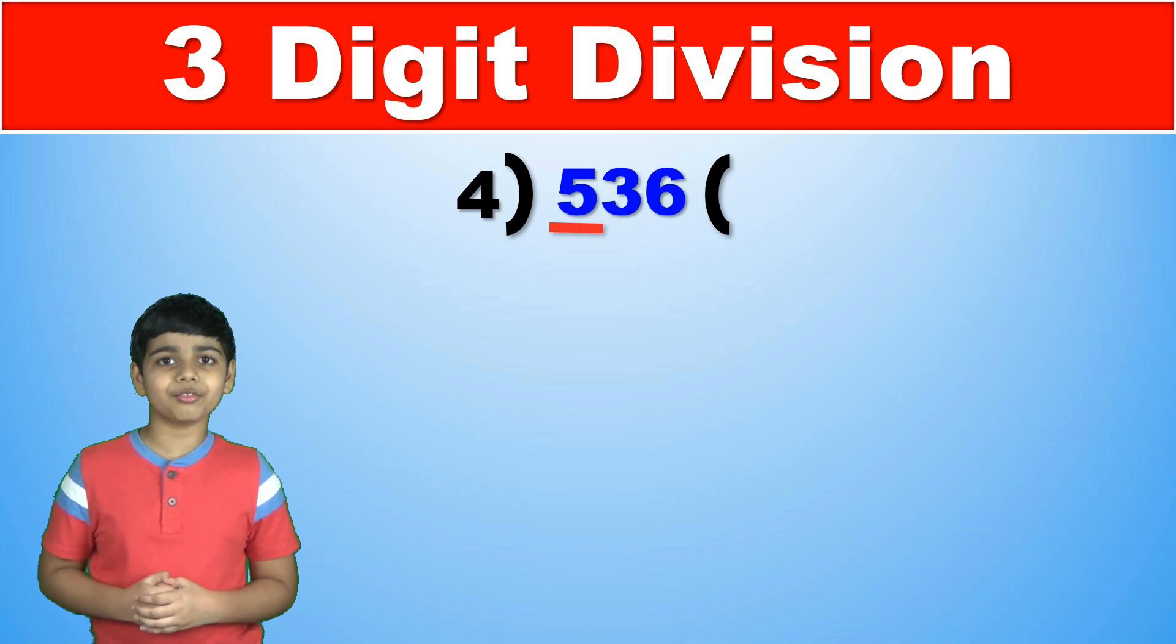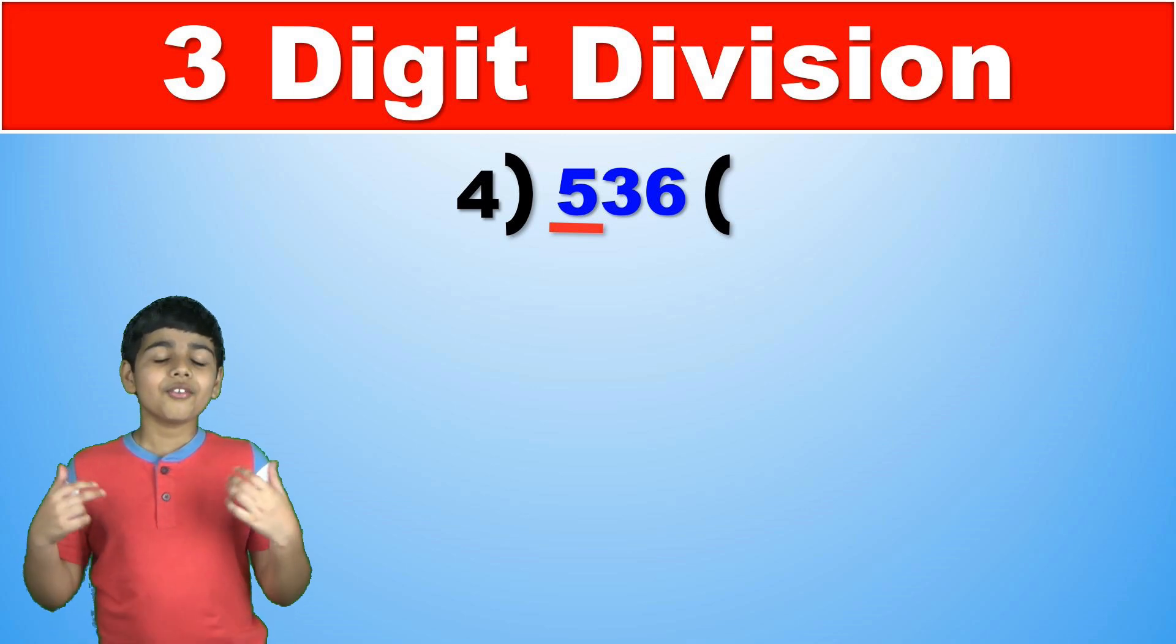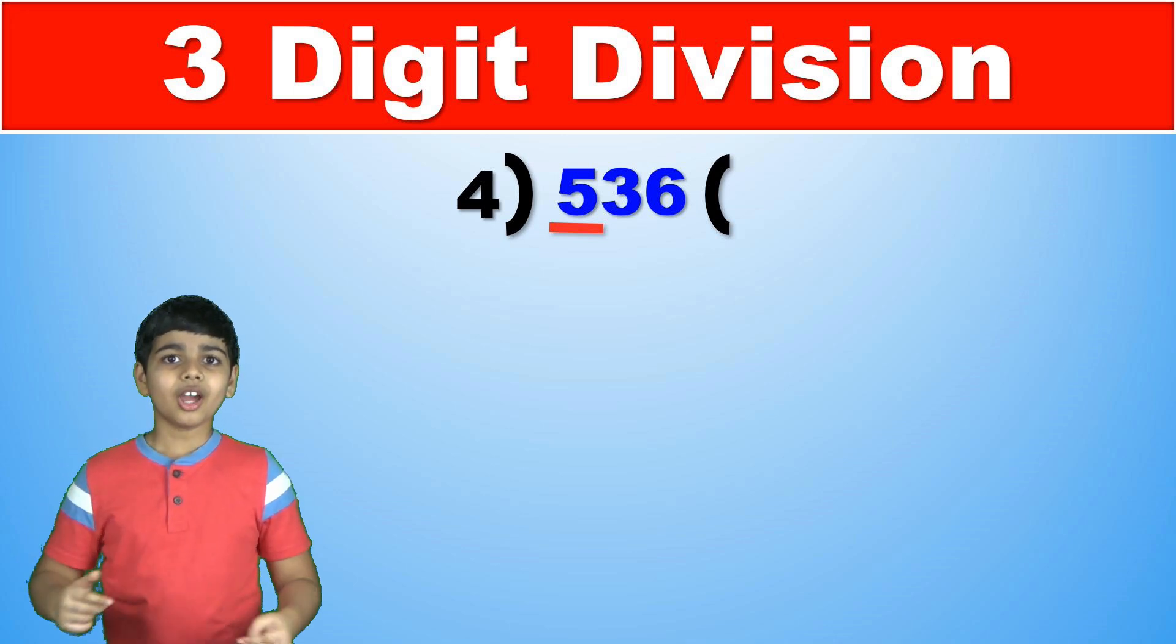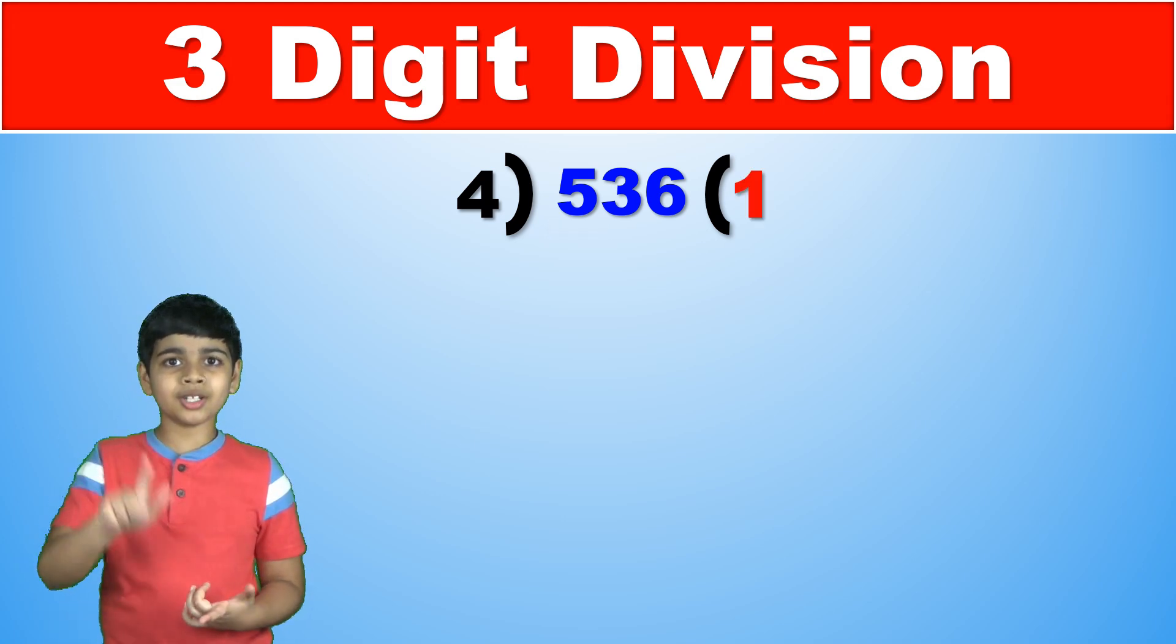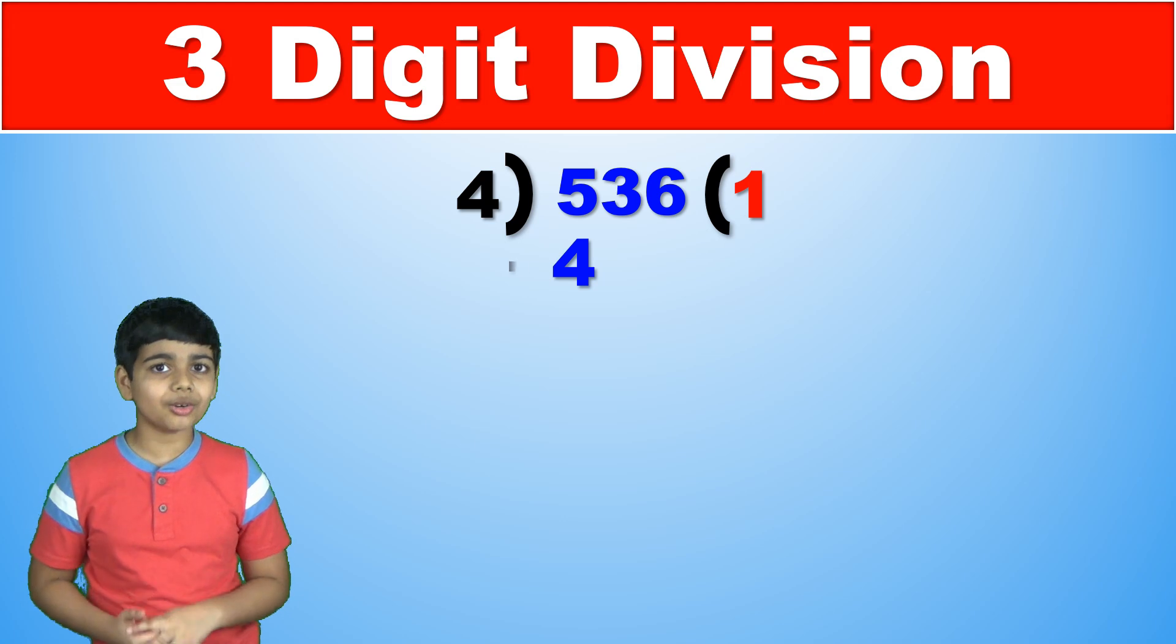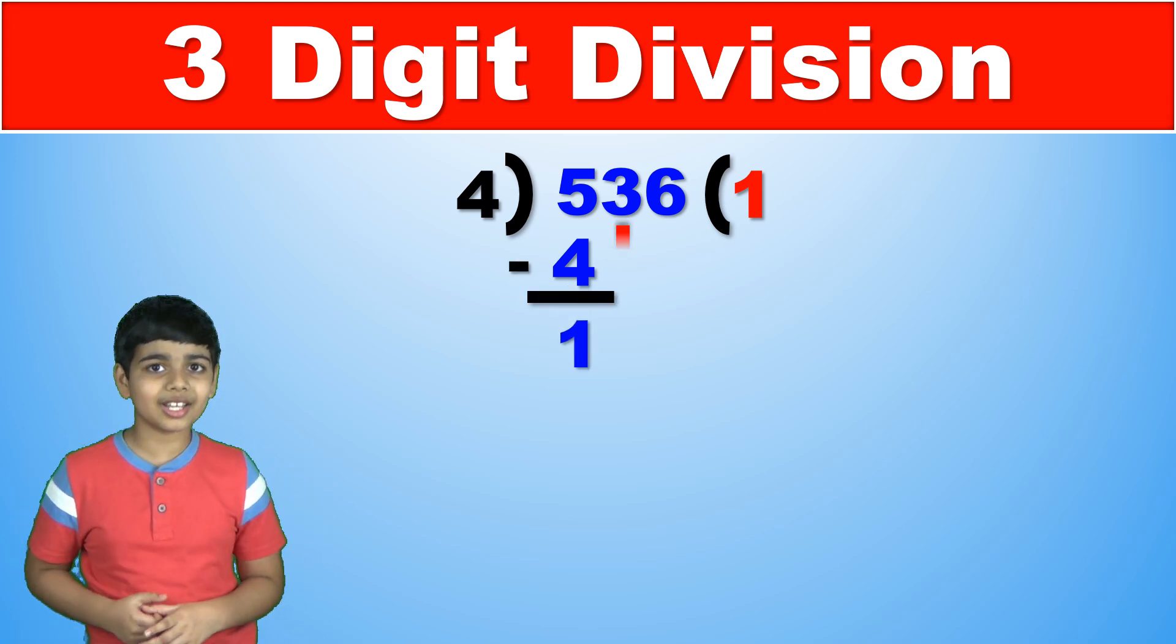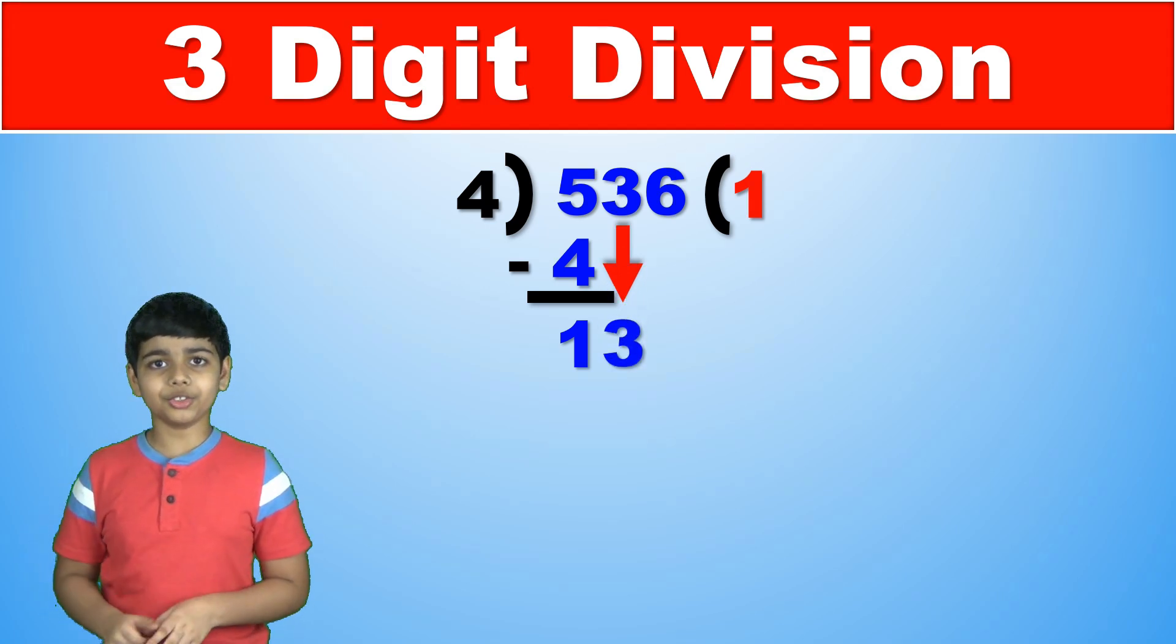So 5 is greater than 4 which means we can find the greatest multiple of 4 under 5 which is obviously 4. And 4 is 4 times 1 so we write 1 as the answer. Now 5 minus 4 is 1. And now we drop down the next digit in the dividend which is 3.